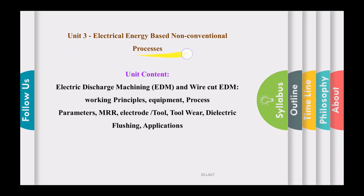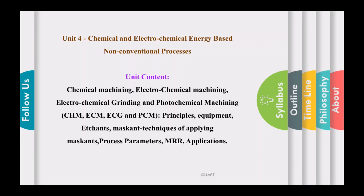In unit number three — electrical energy based non-conventional machining processes — we are going to cover electric discharge machining (EDM) and wire-cut EDM. For these two processes we will learn working principles, equipment used, process parameters, variation of material removal rate (MRR), electrode (tool) details, tool wear, methods of dielectric flushing, and applications of EDM and wire-cut EDM.